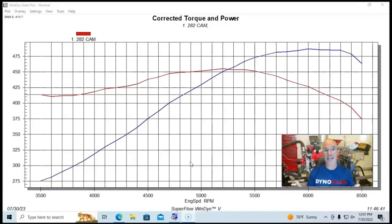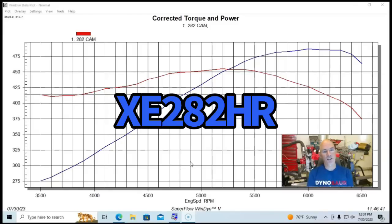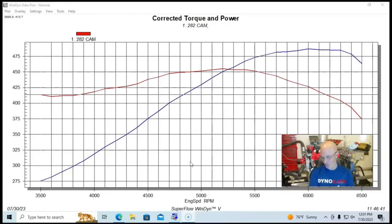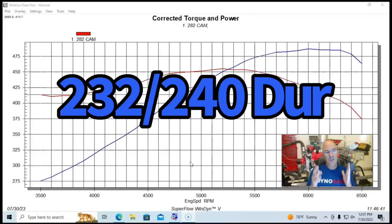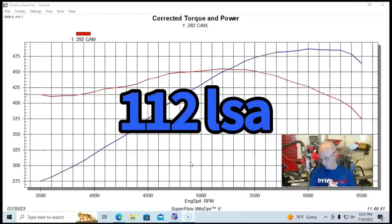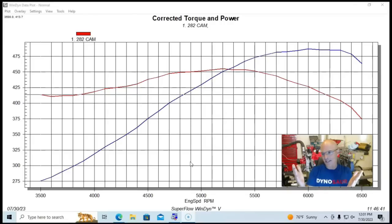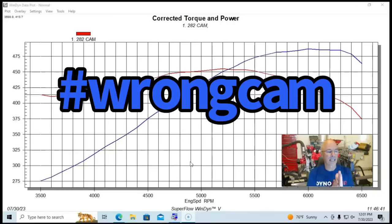We started off with a fairly healthy camshaft. It was an Extreme Energy 282 camshaft. Yes, I know we didn't do the 274 cam that I always do, but the 282 offered a 565-575 lift split, a 232-240 degree duration split, and a 112 degree lobe separation angle. It was basically, you know, let's call it an EFI cam, but a fairly good size EFI camshaft.